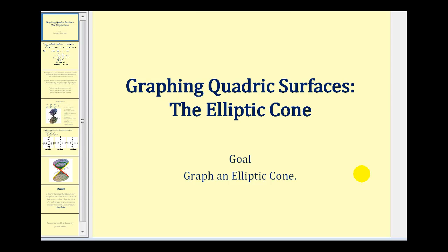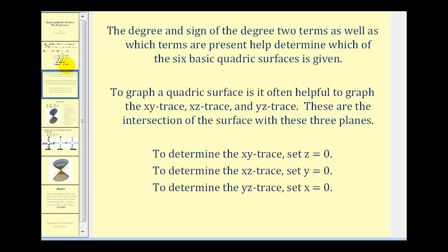Welcome to a lesson on graphing the quadric surface, the elliptical cone. As discussed in previous videos, the degree and sign of the degree two terms, as well as which terms are present, help determine which of the six quadric surfaces is given.